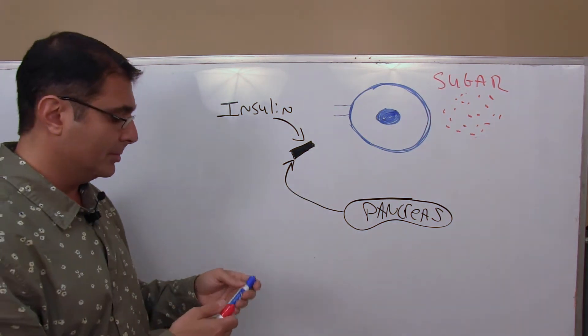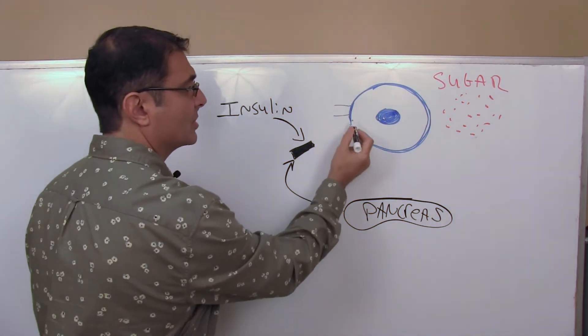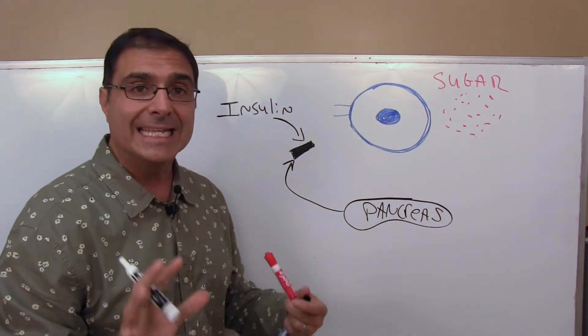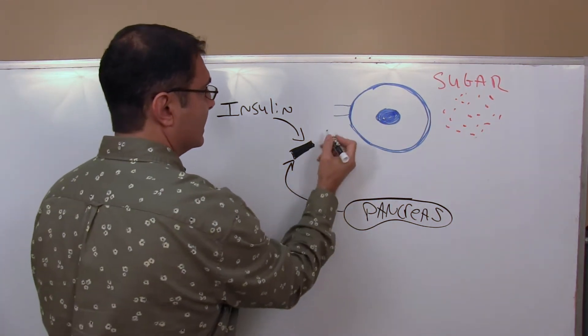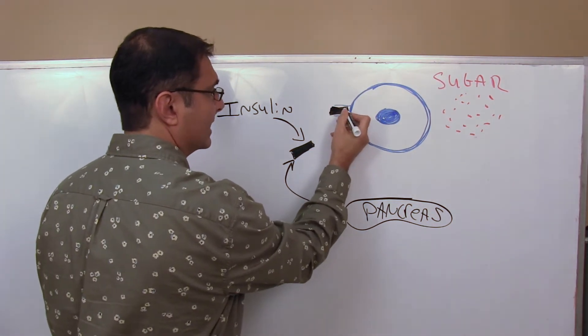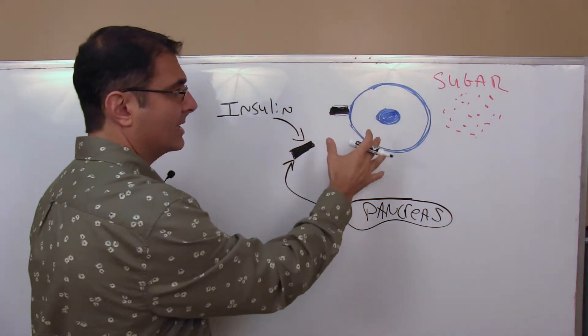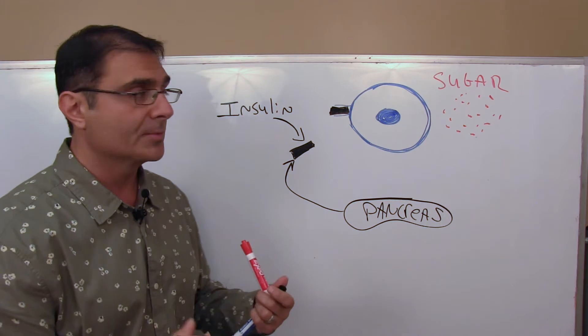Insulin travels through the blood and insulin will plug into this little thing here on the surface of the cell called an insulin receptor. See, the insulin fits exactly right in that receptor, just like a key fits into the lock. When the insulin fits into that receptor, it gives the command to the cell to open up and absorb sugar.